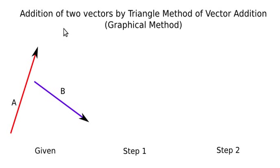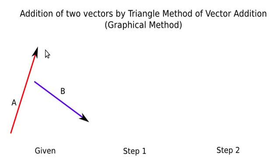This video explains how to add two vectors by the triangle method of vector addition. We have two vectors, vector A and vector B. These vectors may represent some physical quantity where the length of the two vectors is proportional to the magnitude of the physical quantity they represent, such as force. To add the two vectors by the triangle method, we follow two simple steps.